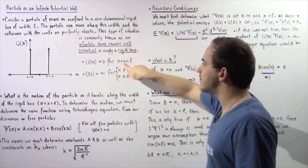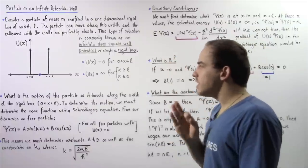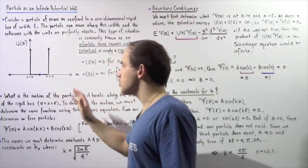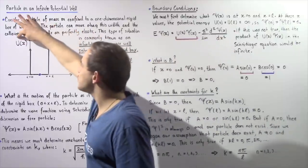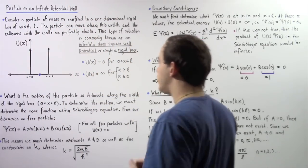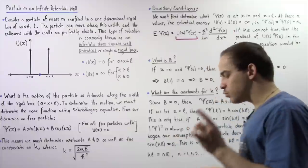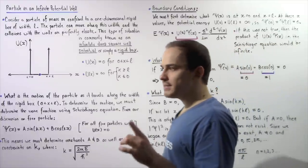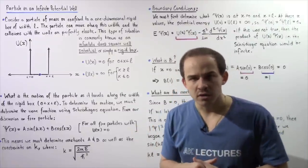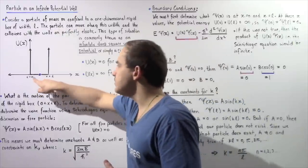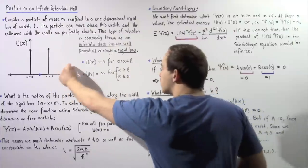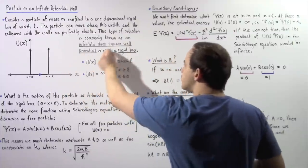When 0 < x < L, the potential is zero. On the other hand, if the particle is found at either corner or anywhere beyond the two corners, the potential energy U(x) jumps to infinity. The question we want to explore is: what exactly is the behavior and motion of our particle as it moves between these two corners of the box?